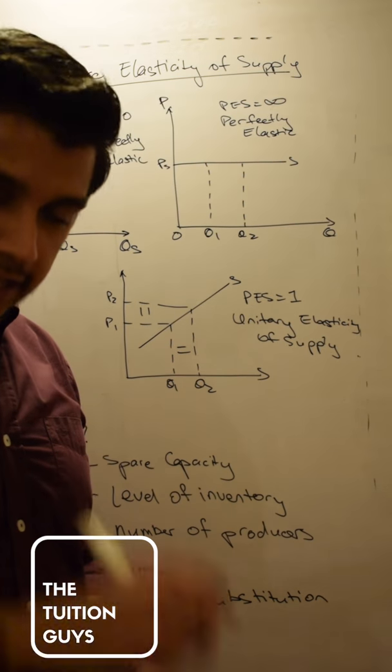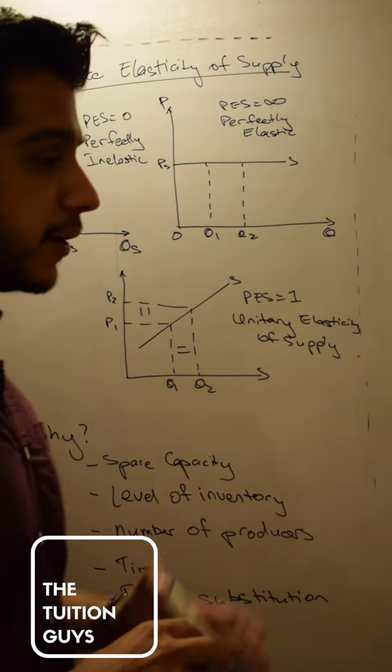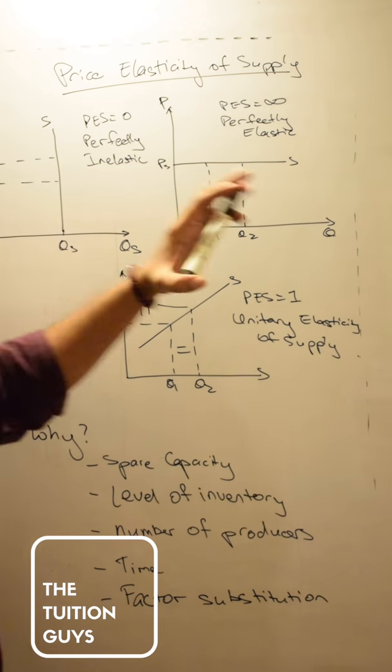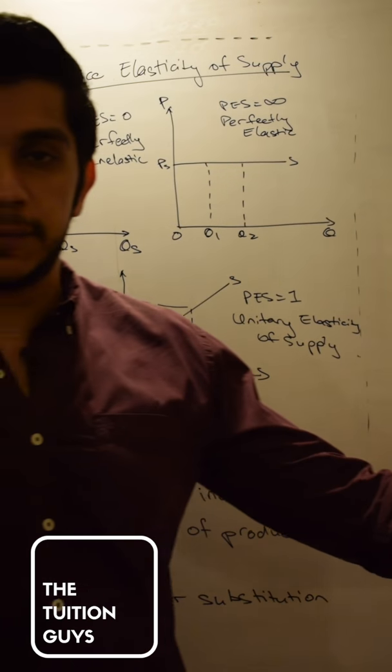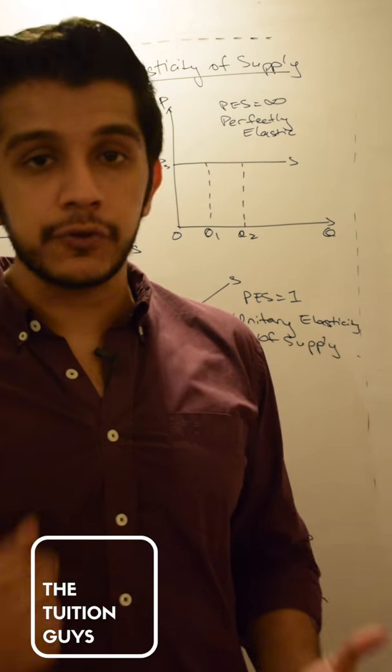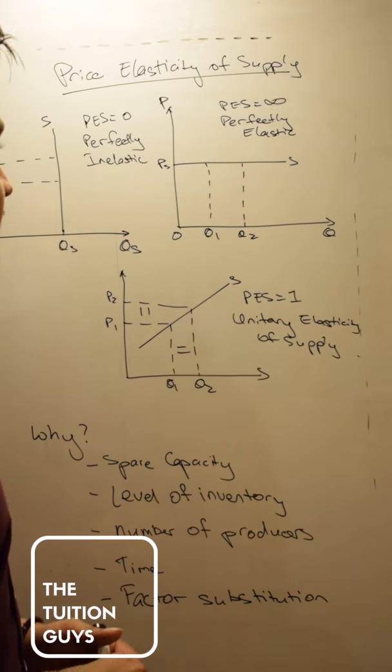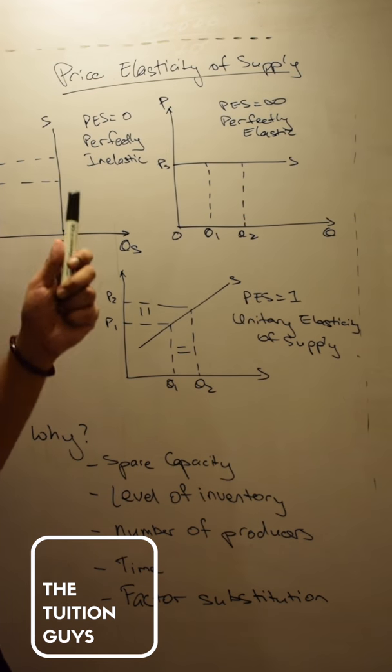Just like in demand, where perfectly inelastic or elastic are basically opposite ends of the spectrum and reference points, they don't really exist. The same is over here in supply.